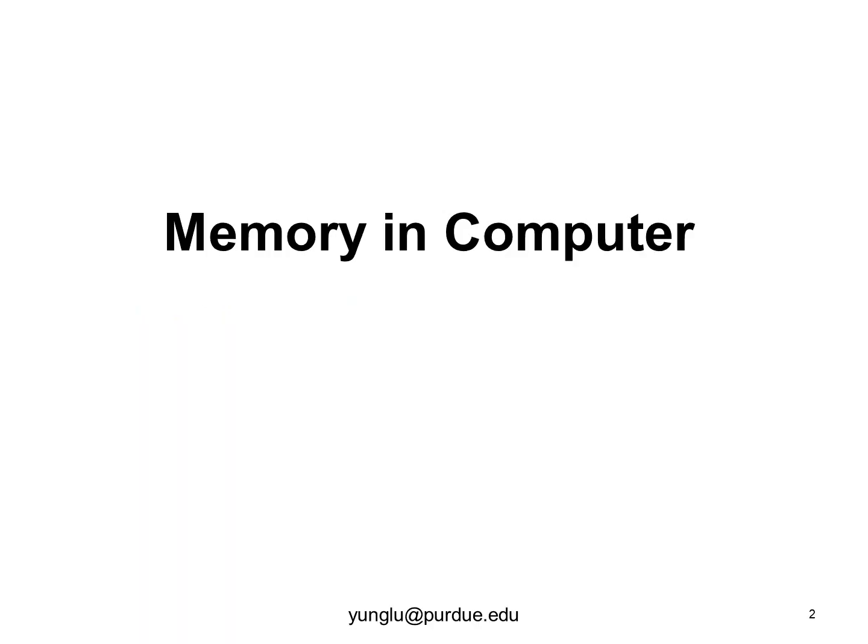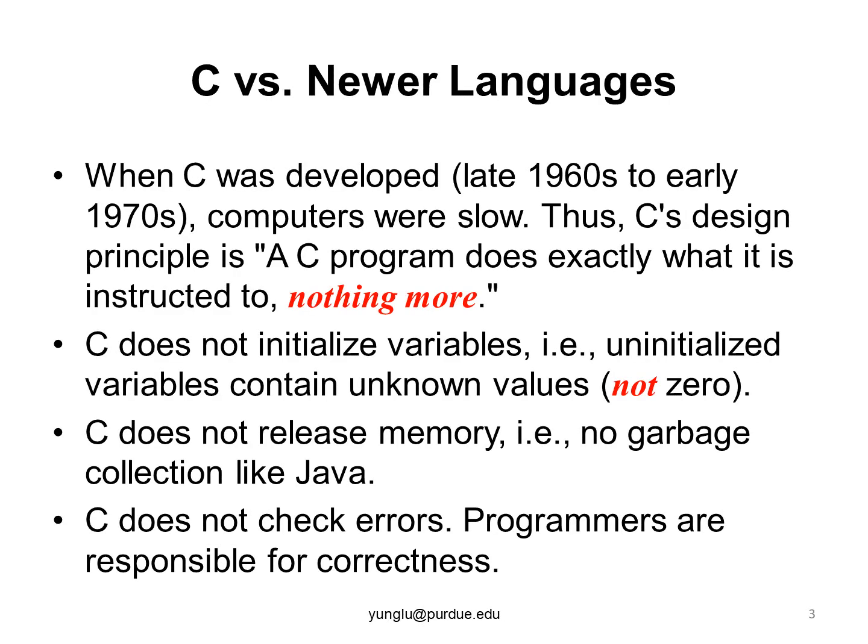This explains the concept of memory inside computers. Let me start with a little history about programming languages. When C was developed, computers were expensive and slow. The designers of C language took the following philosophy: a C program does exactly what the program says, and nothing more. What does this mean? Many things.